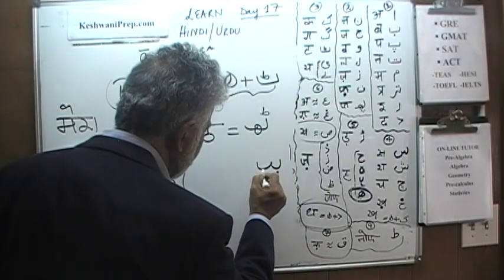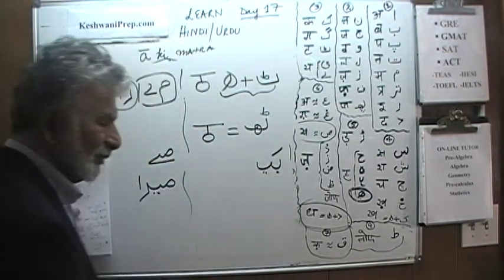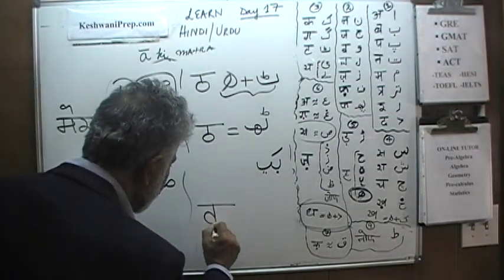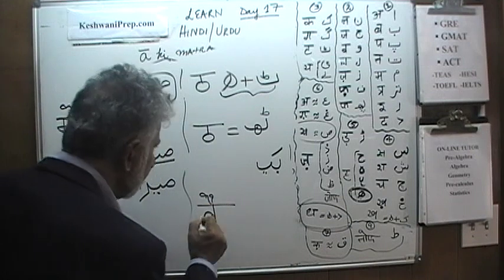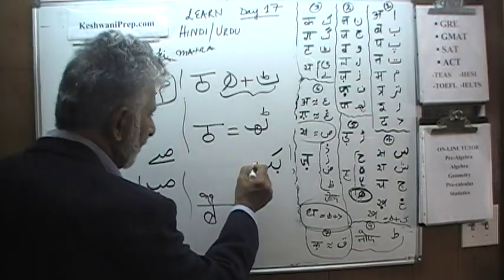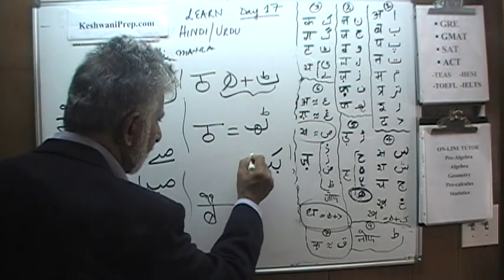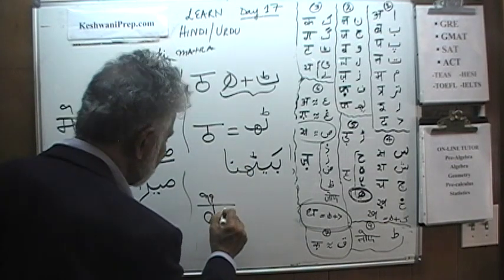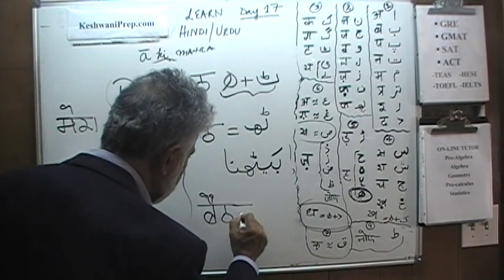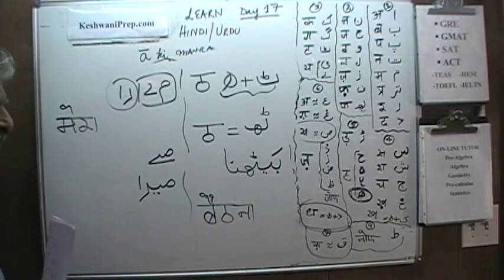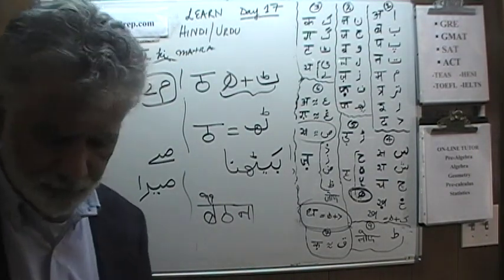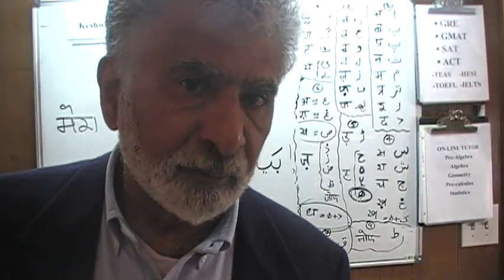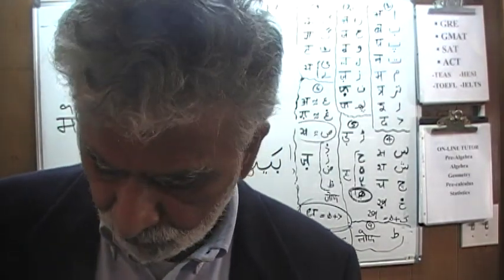Now the word: Be, Badi Ye with a Zabar — longer 'Be,' Badi Ye ki Matra — then this Th letter, then Ta, Na: 'Beithna,' meaning 'to sit down.' Beithna has a longer A sound, as opposed to Mera, which has a quick short sound.